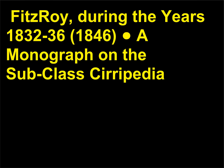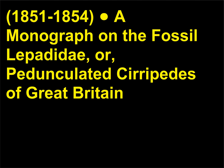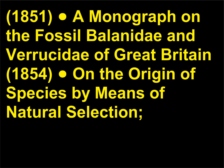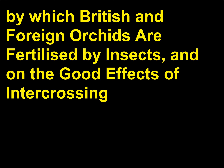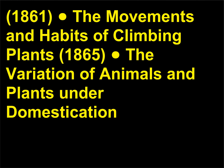A Monograph on the Fossil Lepadidae, or Pedunculated Cirripedes of Great Britain, 1851. A Monograph on the Fossil Balanidae and Verrucidae of Great Britain, 1854. On the Origin of Species by Means of Natural Selection, or the Preservation of Favoured Races in the Struggle for Life, 1859. On the Various Contrivances by which British and Foreign Orchids are Fertilised by Insects, 1861. The Movements and Habits of Climbing Plants, 1865.